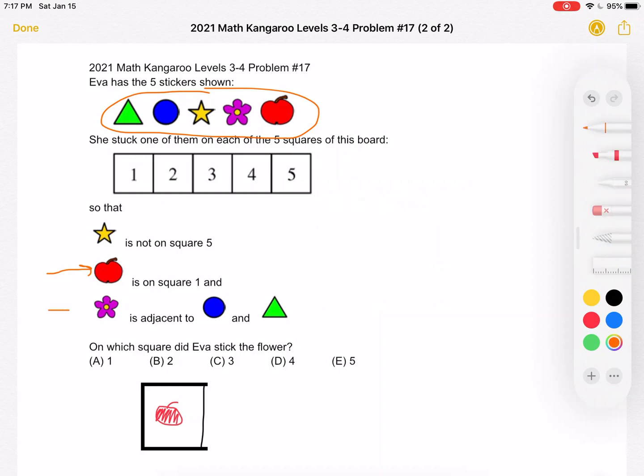Next, we know that the flower is adjacent to the circle and the triangle. So when they tell us that the flower is adjacent to those two shapes, it means that it's between the circle and the triangle.